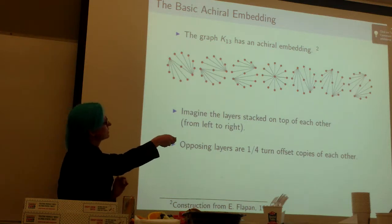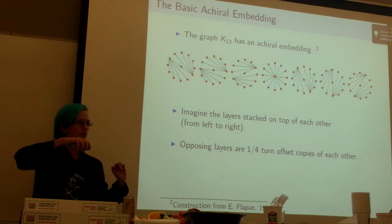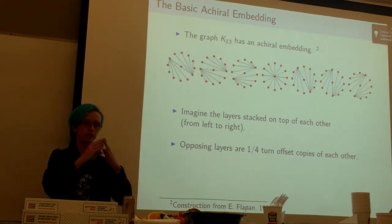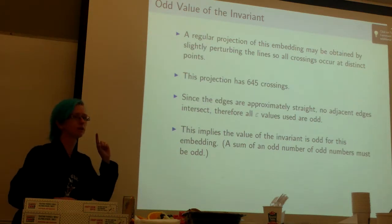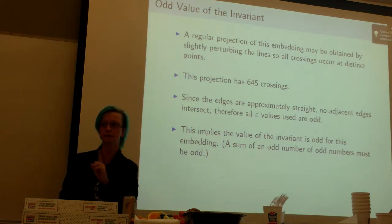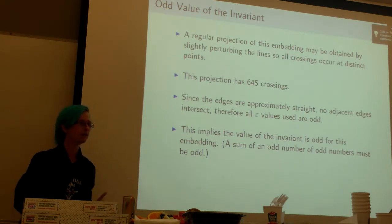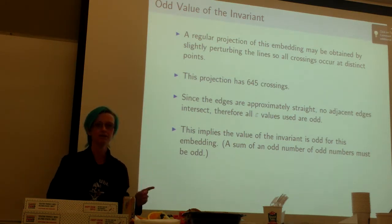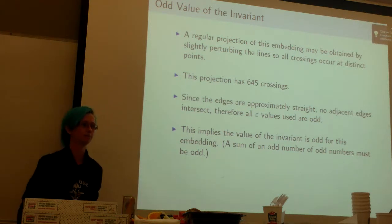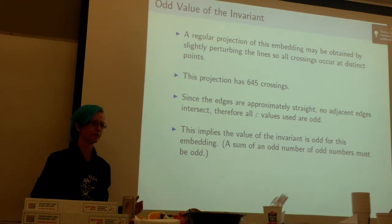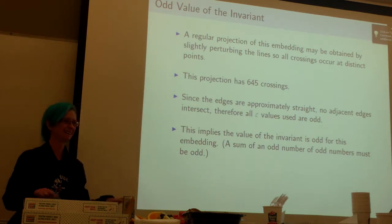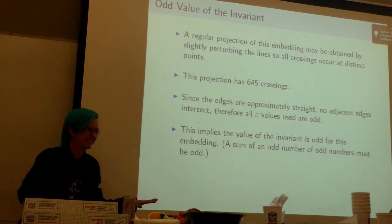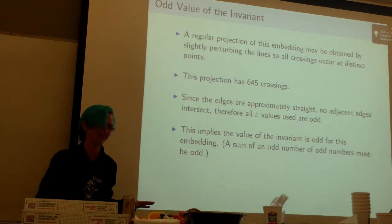Which doesn't really matter except that it's an odd number. And when you look at these layers, in each layer you only have straight lines, so you never have adjacent edges crossing each other, which means there are 645 terms in that sum. And because all of the epsilon values are odd, every one of those terms is odd. So we've got a sum of an odd number of odd numbers, it's odd. Thankfully that's all we need to know about it. I'm glad I didn't have to actually calculate the value.